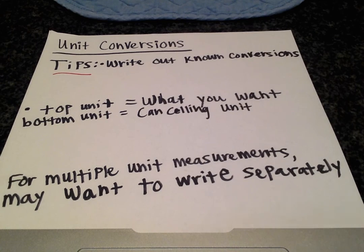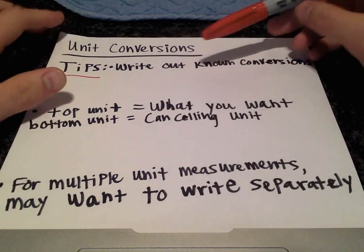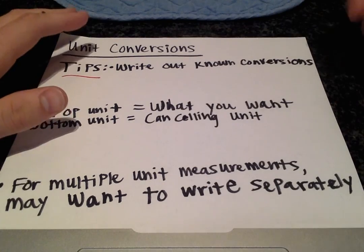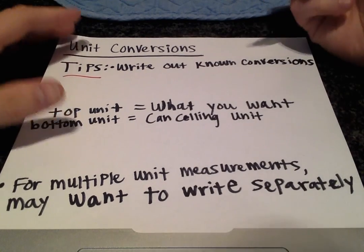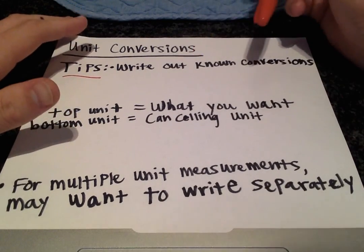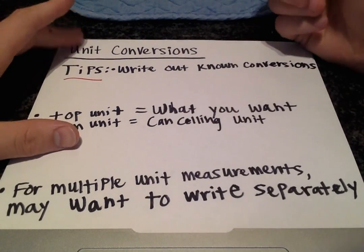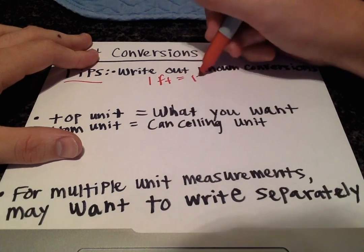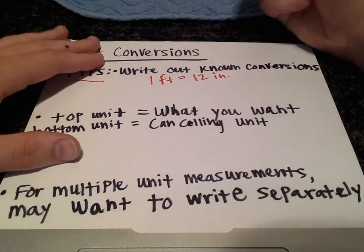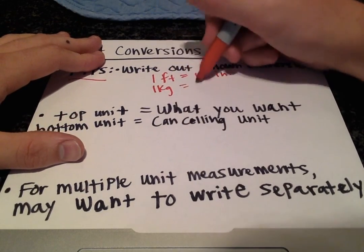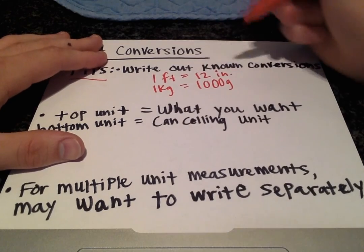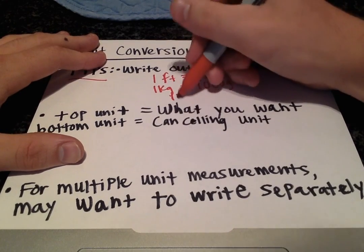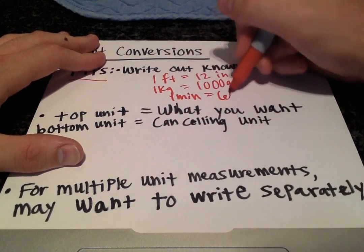Alright, so when working with any sort of unit conversions, one thing you're going to want to do is to write out the known conversions. So let's just say from either the back of your book or from the problem you can extract the relevant information such as 1 foot equals 12 inches, 1 kilogram equals 1,000 grams, 1 minute equals 60 seconds.